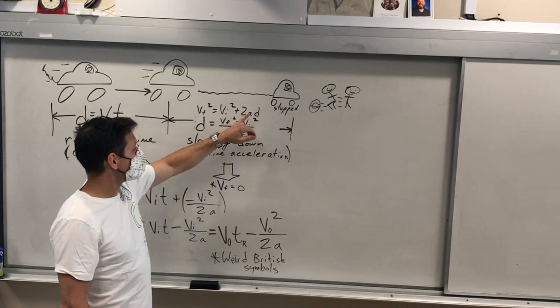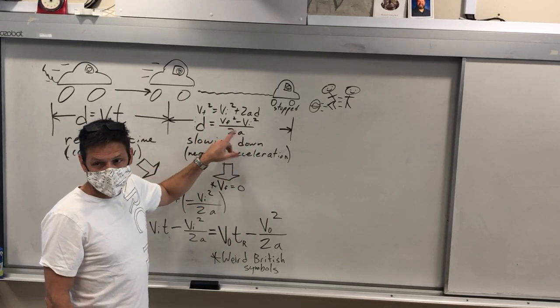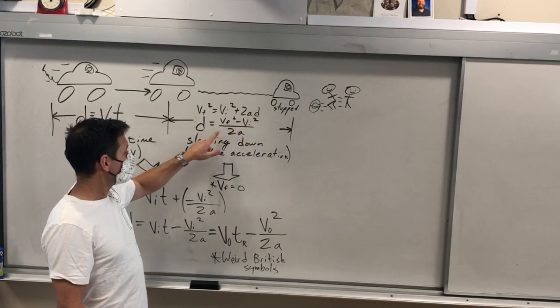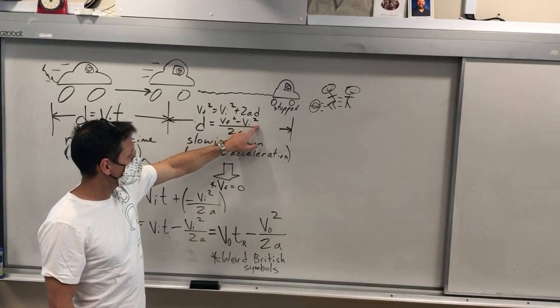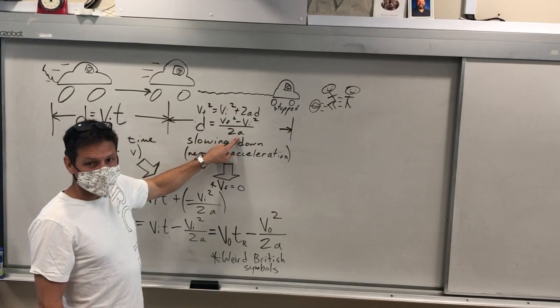So we can use, there are different ways to do this, but if you use the second formula and you manipulate it, you'll get VF squared minus VI squared over 2A.